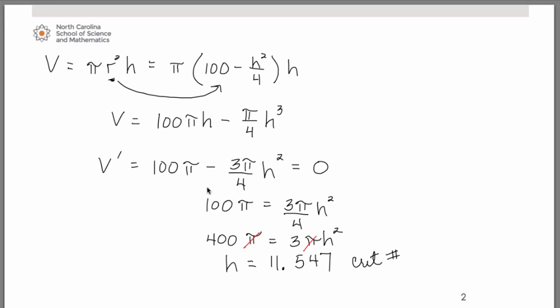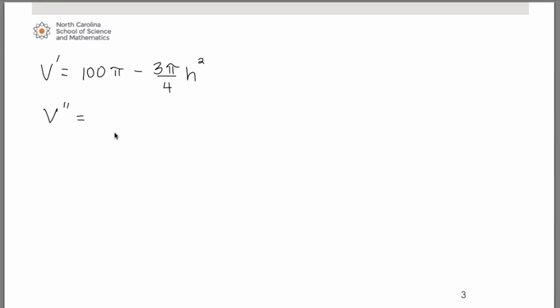We're going to evaluate that second derivative at the critical number. Depending upon whether we obtain a positive or a negative answer from that, it tells us if we have either a maximum or a minimum point. If we go ahead and find our second derivative off of our first derivative, the derivative of 100 pi is simply 0, so that's gone. Derivative of negative 3 pi over 4 h squared becomes negative 6 pi over 4 times h.